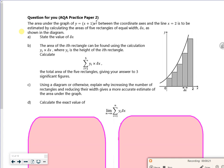So it says the area under the graph for y = (x + 1)x/2 is between the coordinate axes and the line x = 2 to be estimated by calculating the area of five rectangles of equal width, delta x, as shown in the diagram. State the value of delta x. So that's just going to be b minus a over n, which is 2 minus 0 over 5, which is 0.4. So each width of them is 0.4.